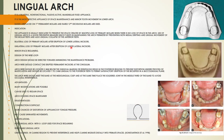Indications for lingual arch: it is indicated to preserve space created by multiple loss of primary molars where there is no loss of arch space. It prevents mesial drifting and lingual movement of the molar, and prevents lingual collapse of the anterior teeth. It is used after bilateral loss of primary molars following eruption of the lower lateral incisors.